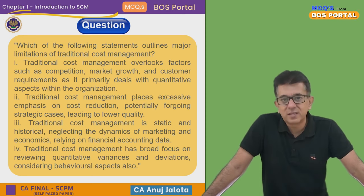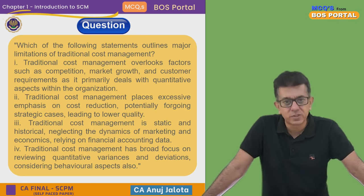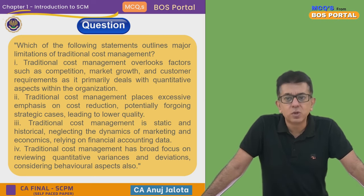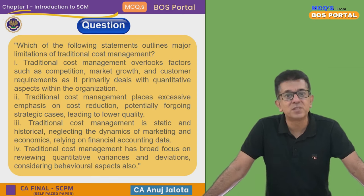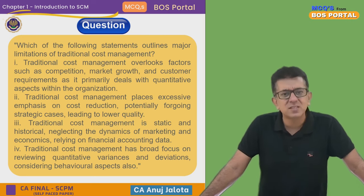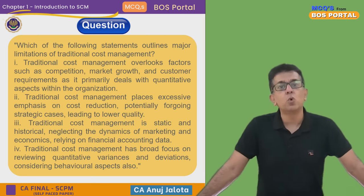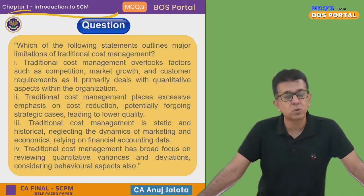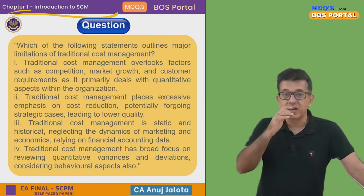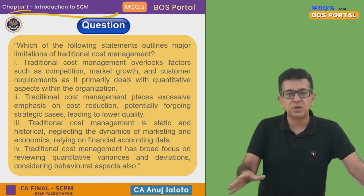Statement one: traditional cost management overlooks factors such as competition, market growth, and customer requirements, as it primarily deals with quantitative aspects within the organization. This is absolutely correct — this is how we started the entire subject. In CA Inter, business thinking was only about controlling cost to raise profit, but today businesses have gone far beyond that. It's about cost management and giving customers more value for the price they pay. So this is a major drawback of traditional cost management.